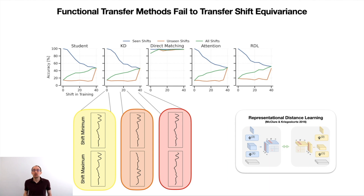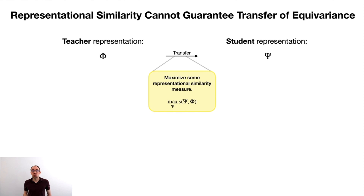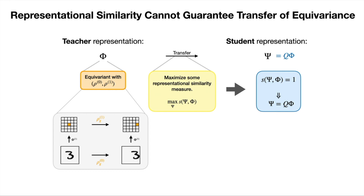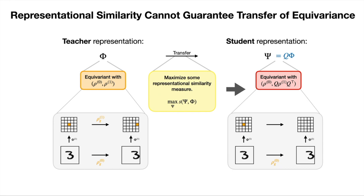Why is this the case? We analyze this from a theoretical perspective for the class of representational similarity methods that RDL belongs to. These methods try to maximize the similarity between teacher and student representations. However, with commonly used similarity measures, even for a perfect match with similarity 1, we only know that the student representation matches the teacher's representation up to an orthogonal transformation. If this holds and we assume that the teacher is equivariant, we show in our paper that the transfer cannot guarantee the student's equivariance with respect to the same group representation. This means that the equivariance of the student may differ from the teacher's, which can negatively affect the rest of the network function.